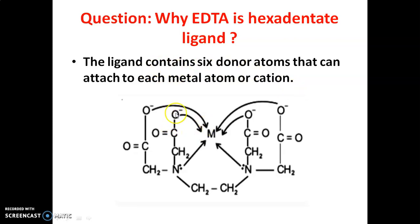Normally, four donor atoms are oxygen: one, two, three, four. Next, two nitrogen atoms are donor atoms. Total is six donor atoms. It undergoes interaction with the central metal atom.